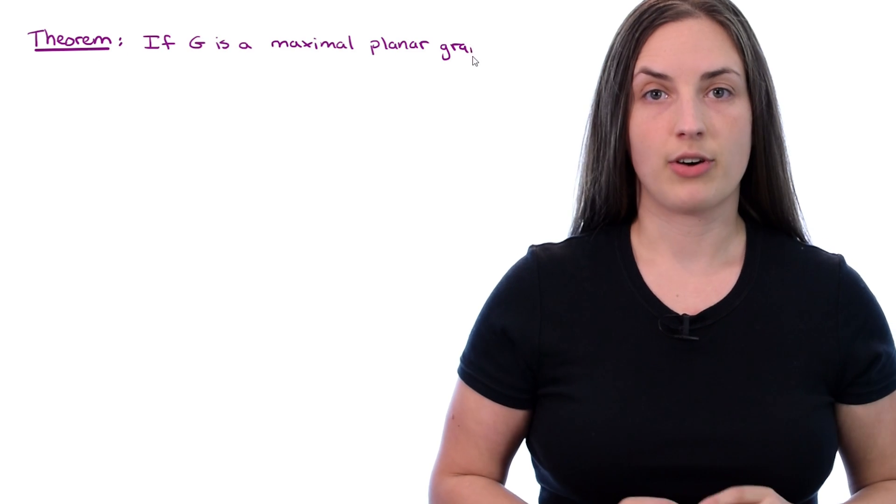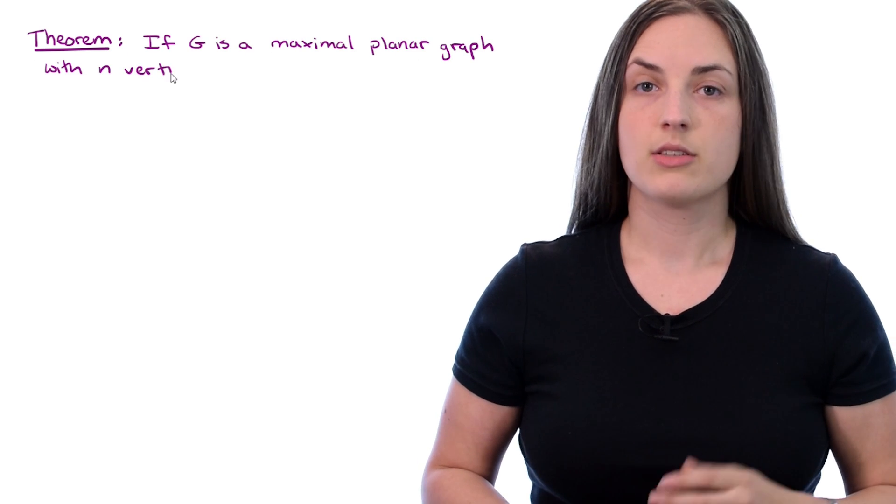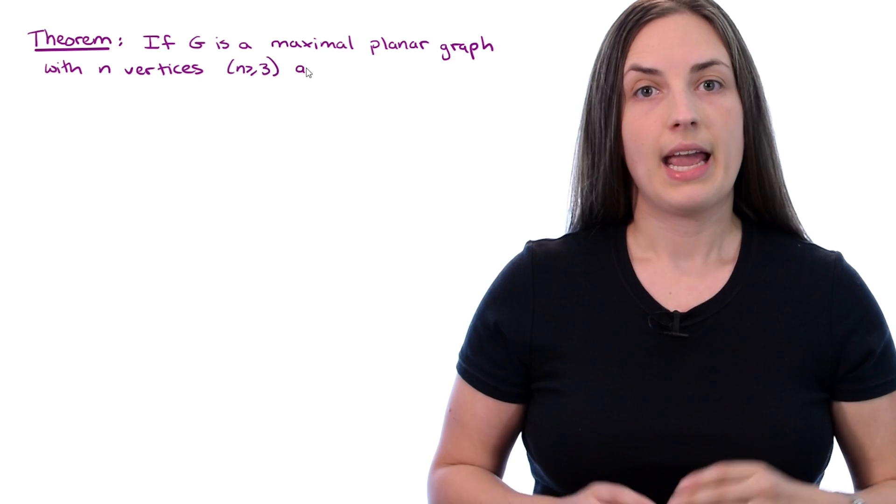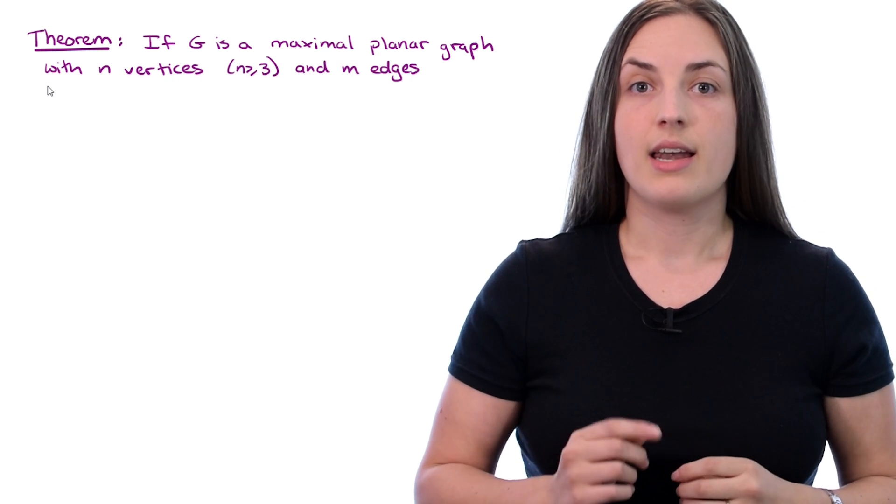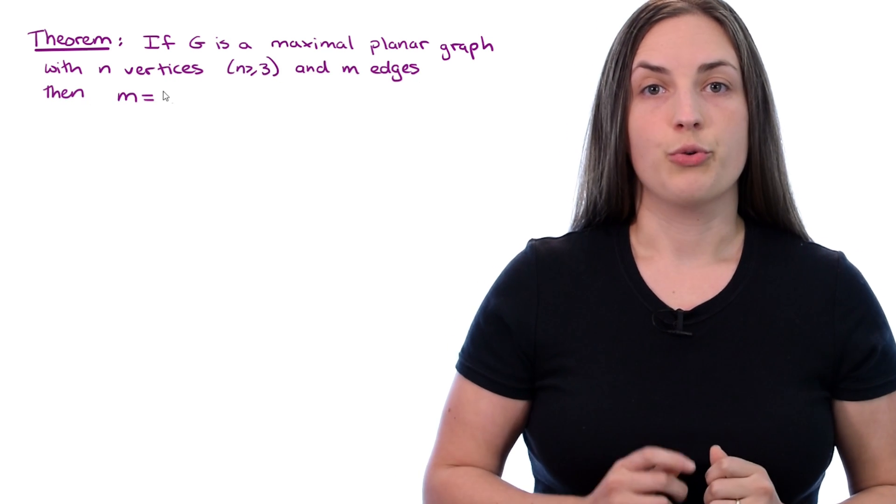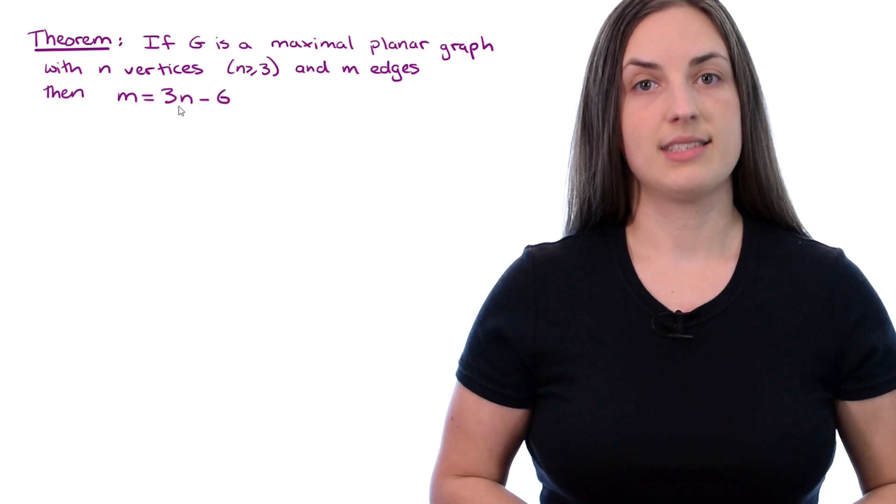We are going to prove that if G is a maximal planar graph on N vertices, where N is at least 3, and M edges, then M is equal to 3 times N minus 6.